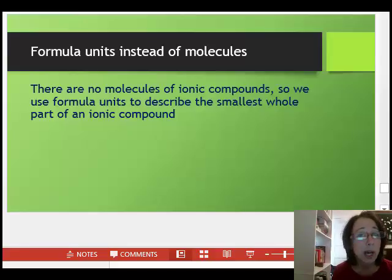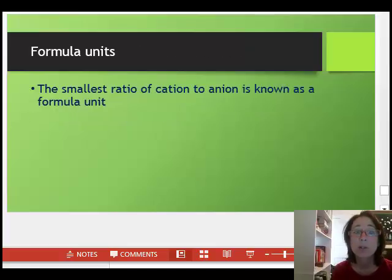Since ionic compounds are not comprised of molecules, we need another way to discuss the cation and anion combinations that make up an ionic compound. The term formula unit describes the combination of cation to anion. A formula unit is the smallest whole number ratio of cation to anion.